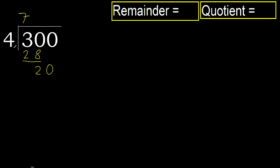Next, bring down 20. 4 multiplied by 5 is 20, which is not greater. 20 minus 20 equals 0.